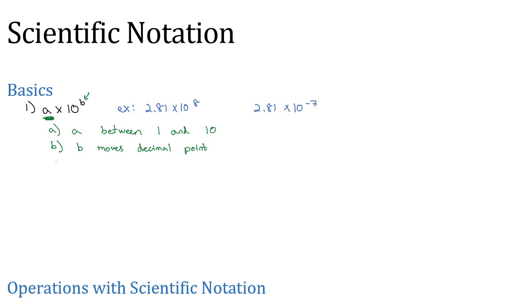It also tells us what direction, because if b is negative, that means we're dealing with a really small number, close to zero. For example, 2.81 times 10 to the negative seventh - it's a very small number, 0.000000281.